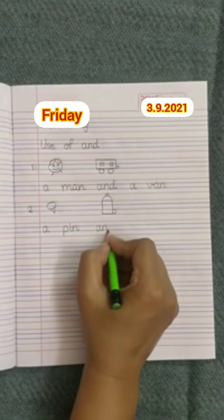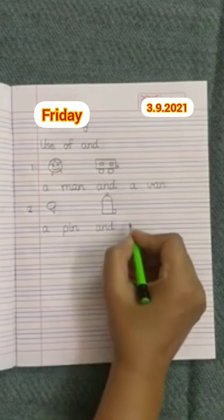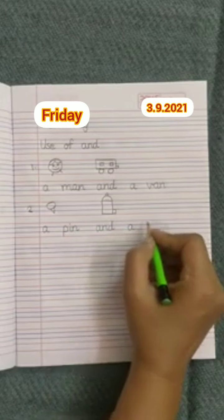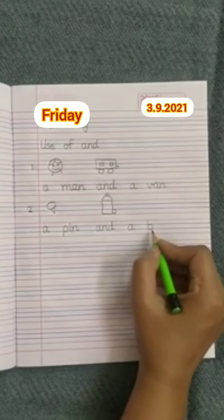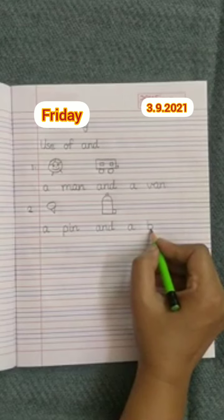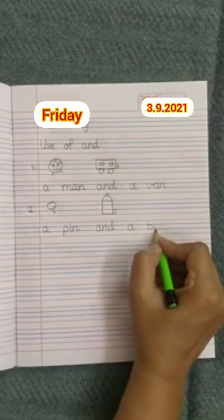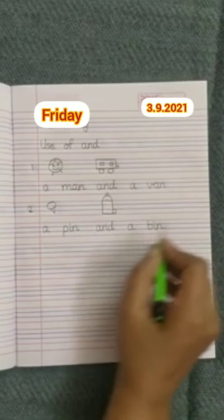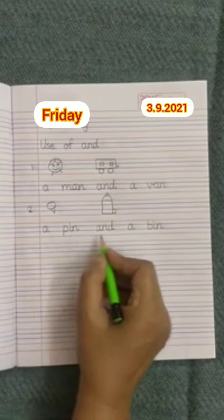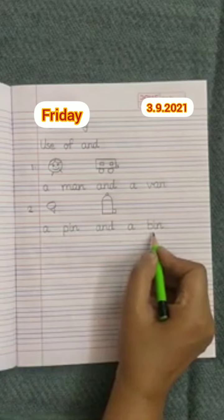And a bin. Again, children, A will not touch with B, but will touch with N. A pin and a bin.